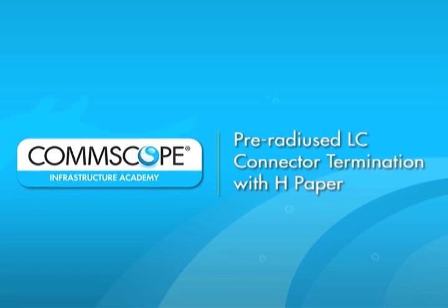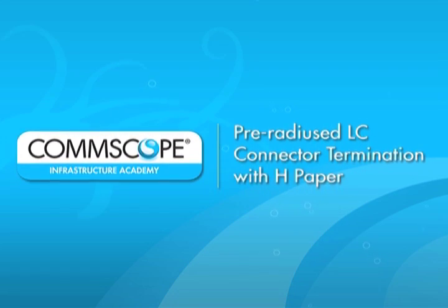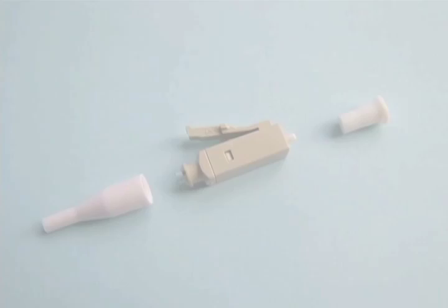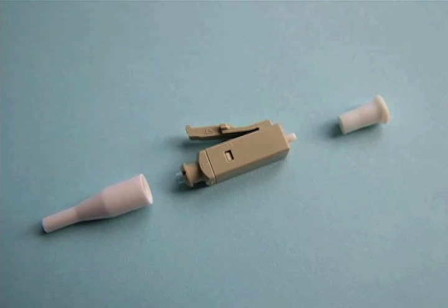These are the steps for installing the pre-radiused LC connector using EC adhesive. The multi-mode LC connector includes the beige connector body, a support boot, and a dust cap.